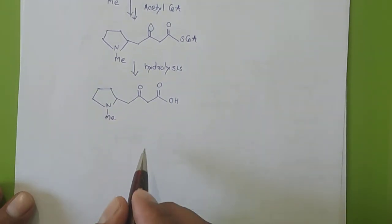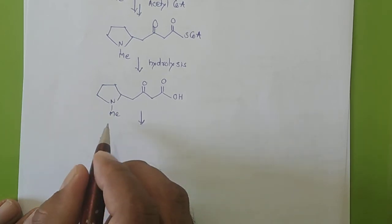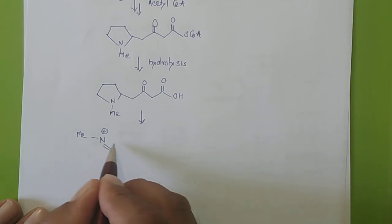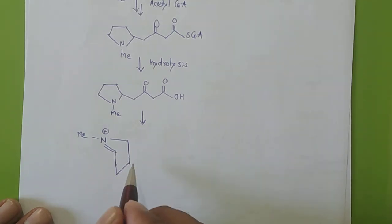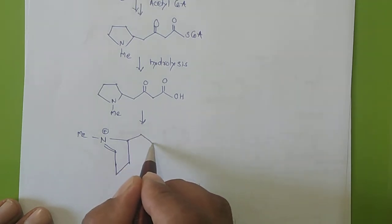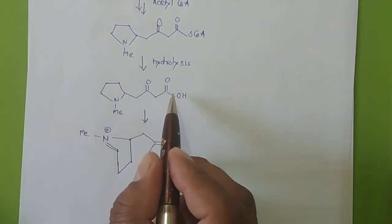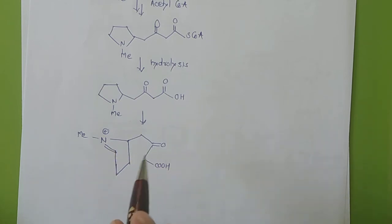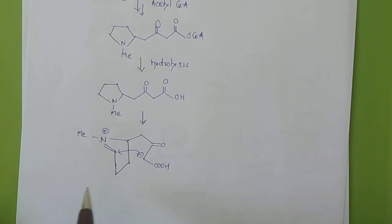After enolization there is formation of a double bond, and this iminium charge will react. There will be rearrangement to a tautomeric product. The N-methyl group with a positive charge, along with the double bonds, forms a five-membered ring with a CH2 group, a C=O, and a COOH. This acidic proton attacks the adjacent bond and the charge is neutralized.